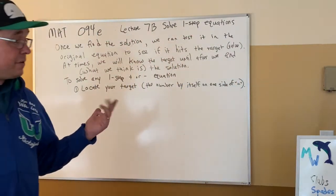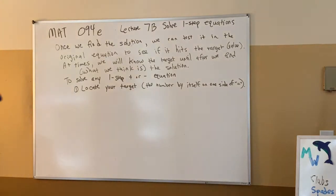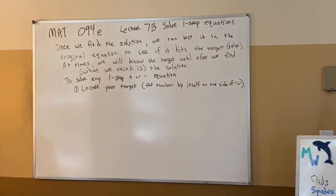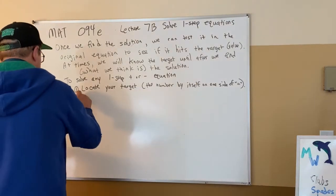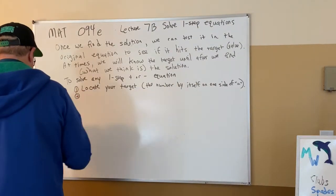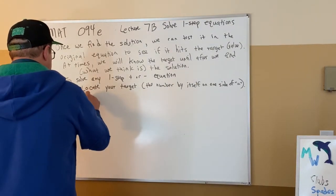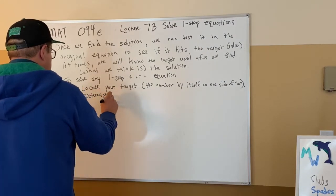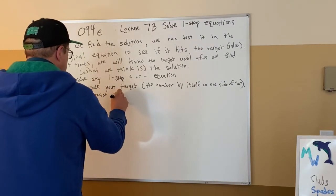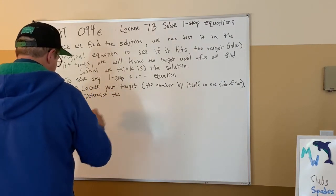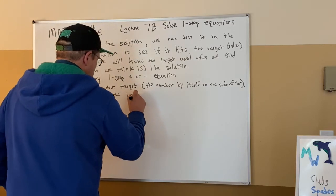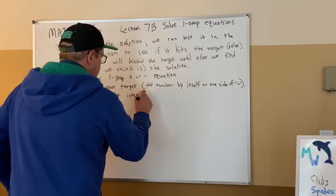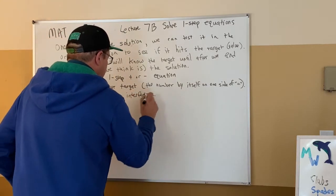If you have one that's got a clear target, that's a number that doesn't have a variable and then some other action going on with it. Number two: determine your interference. Quick explanation of what interference is.